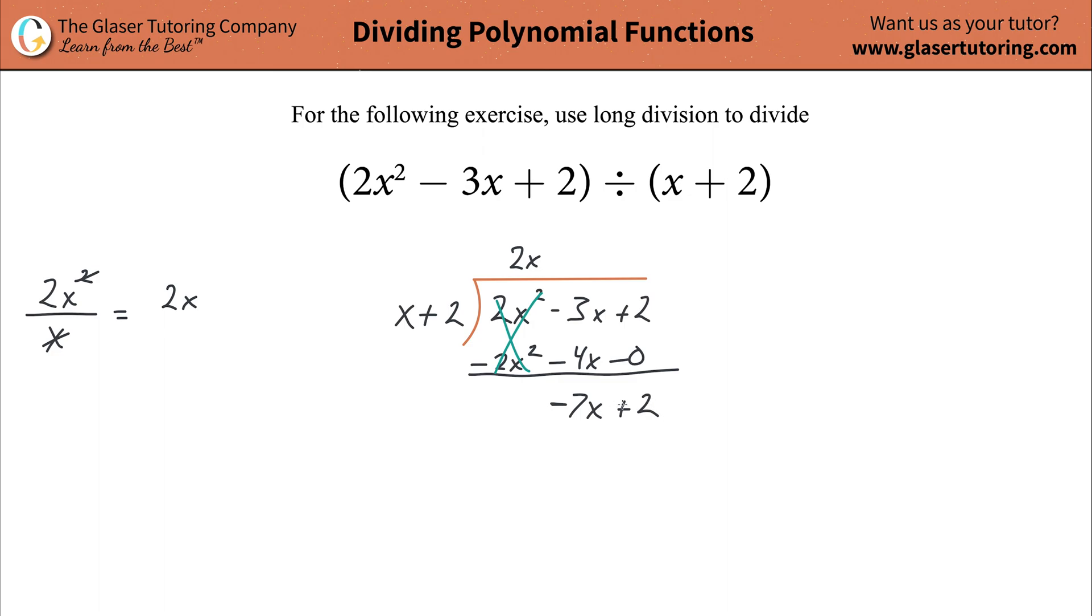Now what you do is you look at this as your new dividend. And what you're going to do is you're going to take then the x term here in your divisor and divide it on into the highest powered x term in your dividend, which is just the negative 7x. Include the sign now, include the sign. So do the work over here, negative 7x over then x. Dividend over divisor. You'll notice that the x's cancel.